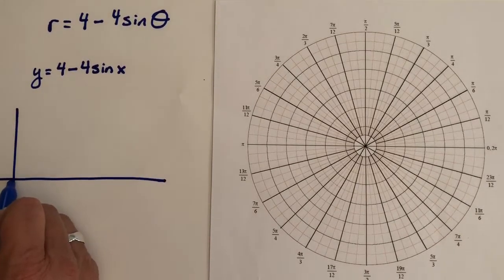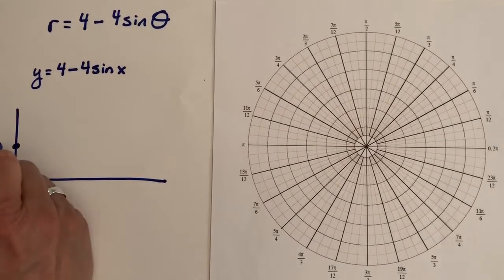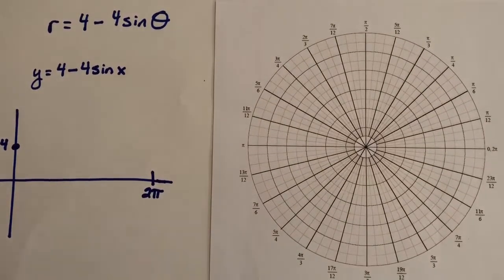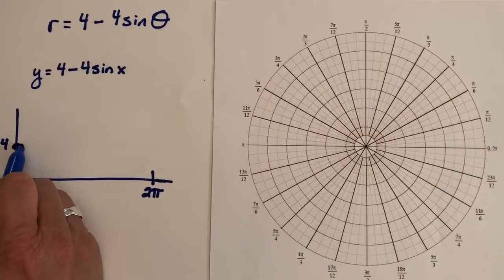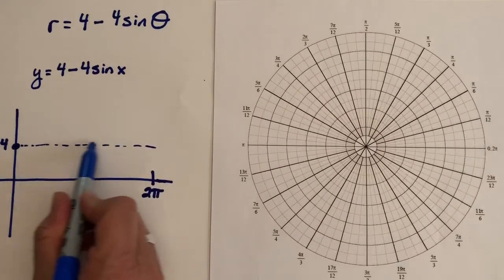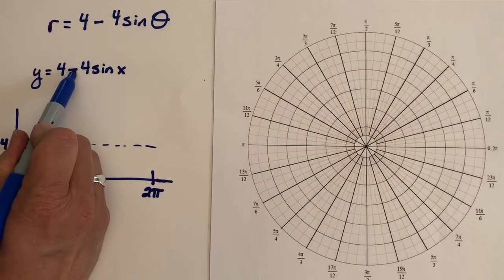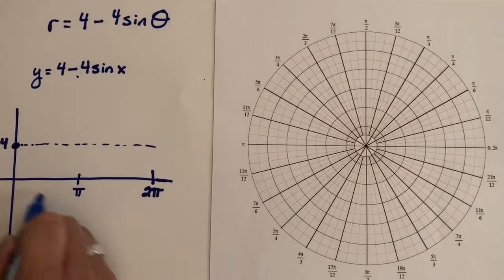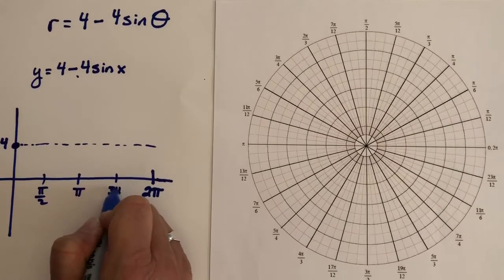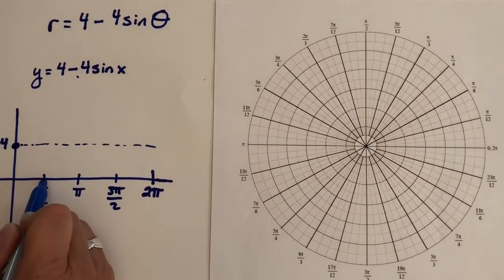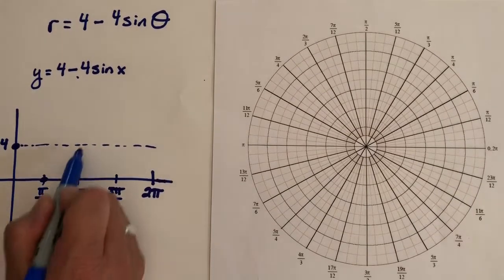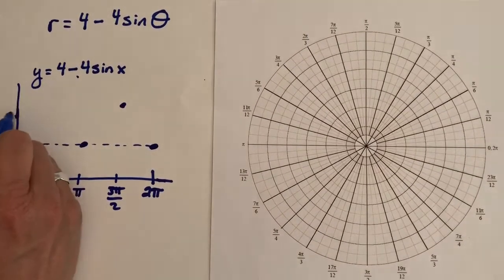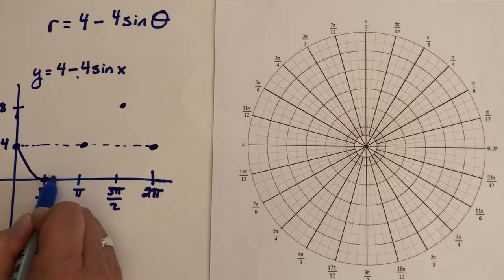So instead of starting at 0, I'm going to have a point at 4 and go out one complete cycle to 2π. Here's my midline, and I'm going down instead of up for my sine, starting here. At pi over 2, I come down to 0, then back up to 4 at π, then go up and back down — getting up to 8. So we have this curve.